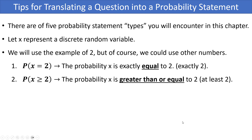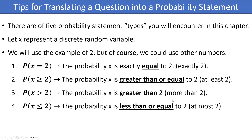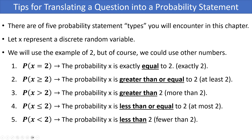Third, the probability that X is strictly greater than 2 — 'more than 2' — represented by a greater-than sign without the equal, so 2 is not included; only values 3, 4, 5, etc. Fourth, the probability that X is less than or equal to 2 — 'at most 2' — represented by a less-than-or-equal-to sign. Fifth, the probability that X is strictly less than 2 — 'fewer than 2' — represented by a less-than sign, not including 2 itself.